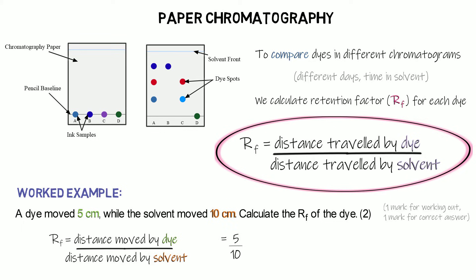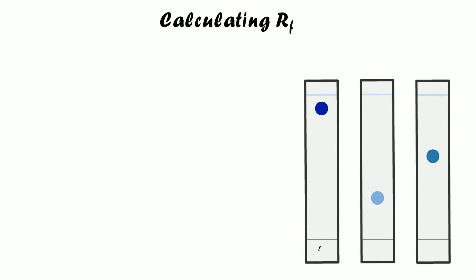The dye moved five centimetres and the solvent travelled ten centimetres, so we do five divided by ten, giving an RF value of 0.5. This is a good result because it's less than one. Remember, RF is always less than one — if you get a number greater than one, you've divided the wrong way round, perhaps ten divided by five instead of five divided by ten.